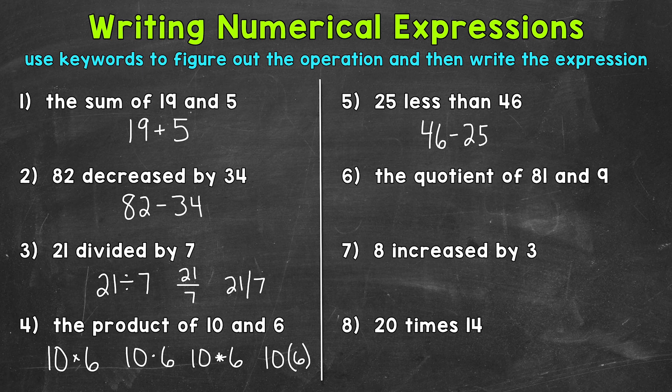On to number 6, where we have the quotient of 81 and 9. Quotient is our keyword. And it means the answer to a division problem. So we have 81 divided by 9 for our numerical expression for number 6.